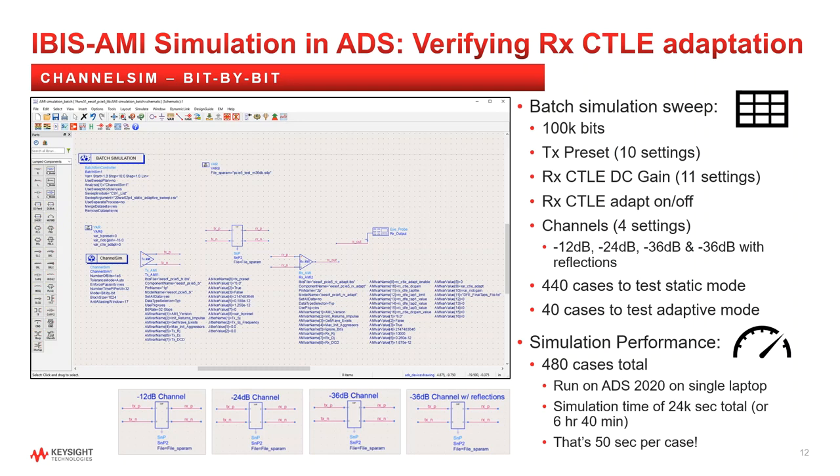The adaptive CTLE feature will reduce the number of simulations required by a factor of 10 by not having to sweep all 11 CTLE settings. So let's take a closer look at the results of all 480 simulations to see if the receiver CTLE feature is working as expected.